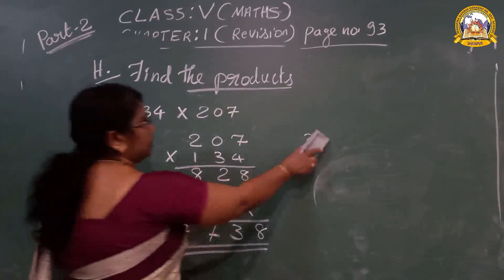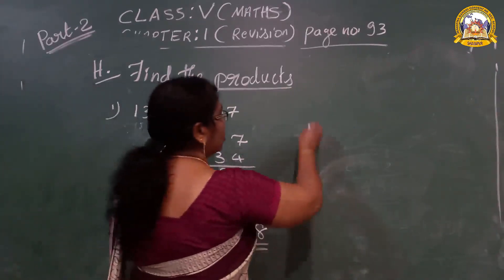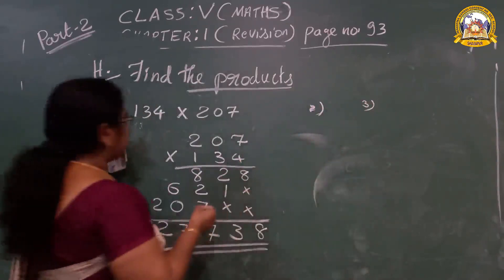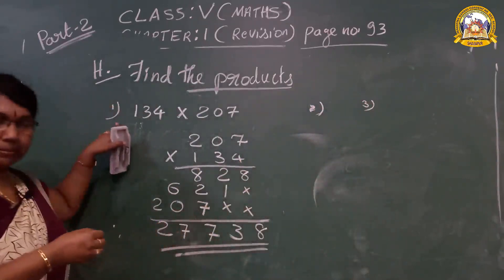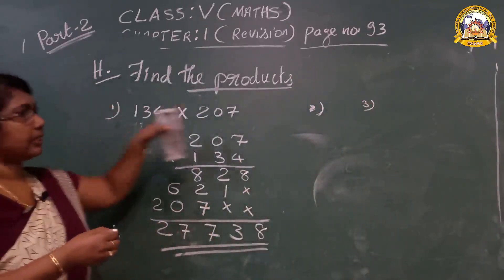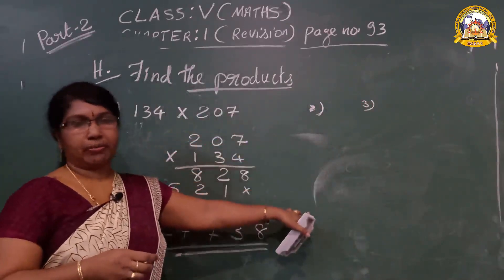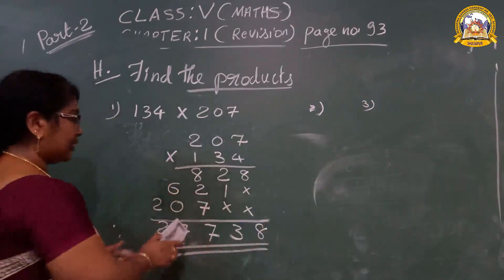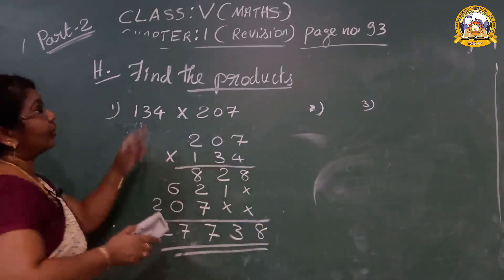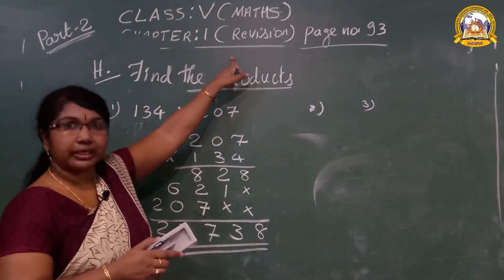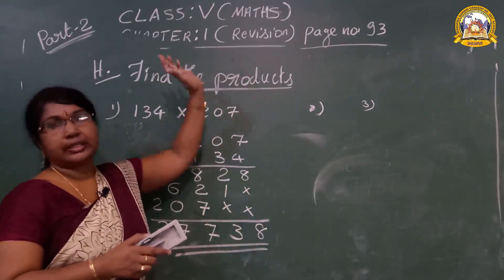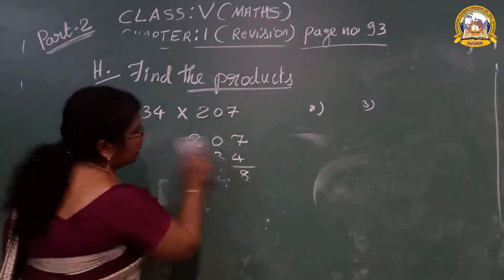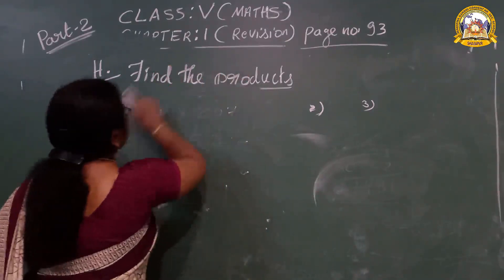Now look, students. Questions number 2 and 3 are given — both are multiplication. You have to do those as homework. It is easy, right? Already you are studying this. What is the name of the chapter? Revision. That means you already studied this last year.